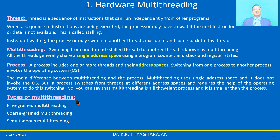There are three types of multithreading: the first one is fine-grained multithreading, the second one is coarse-grained multithreading, and the third one is simultaneous multithreading.